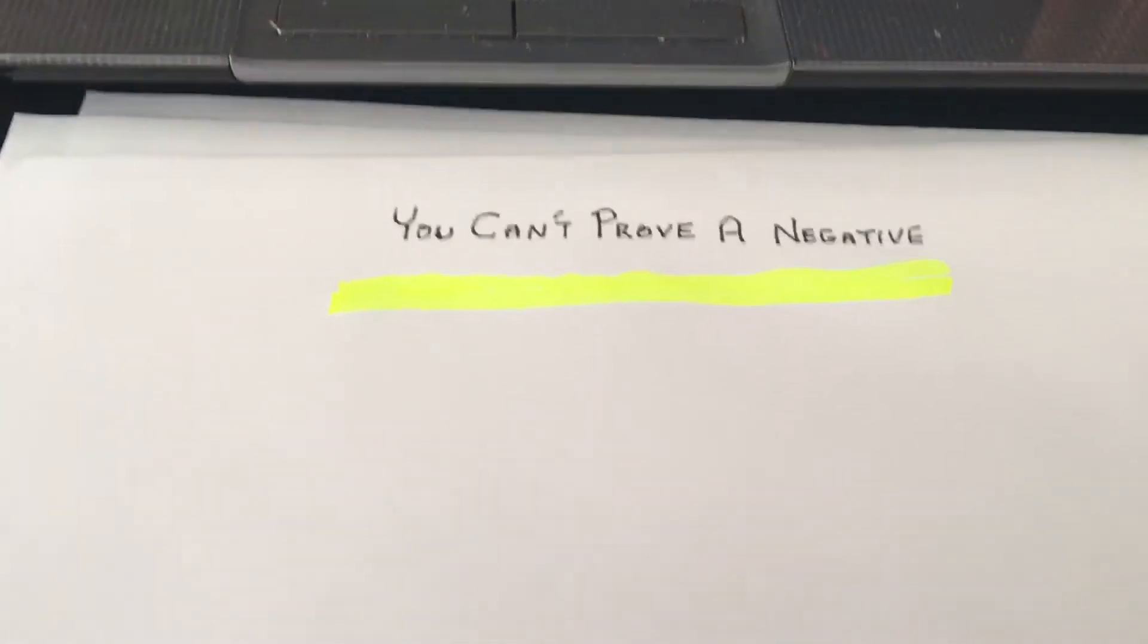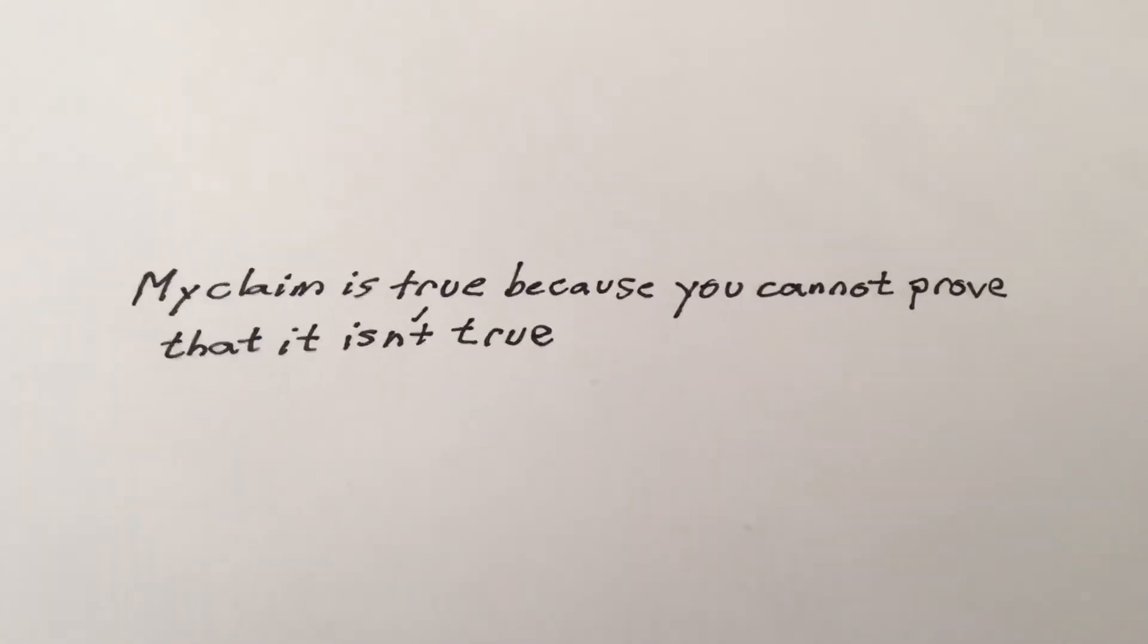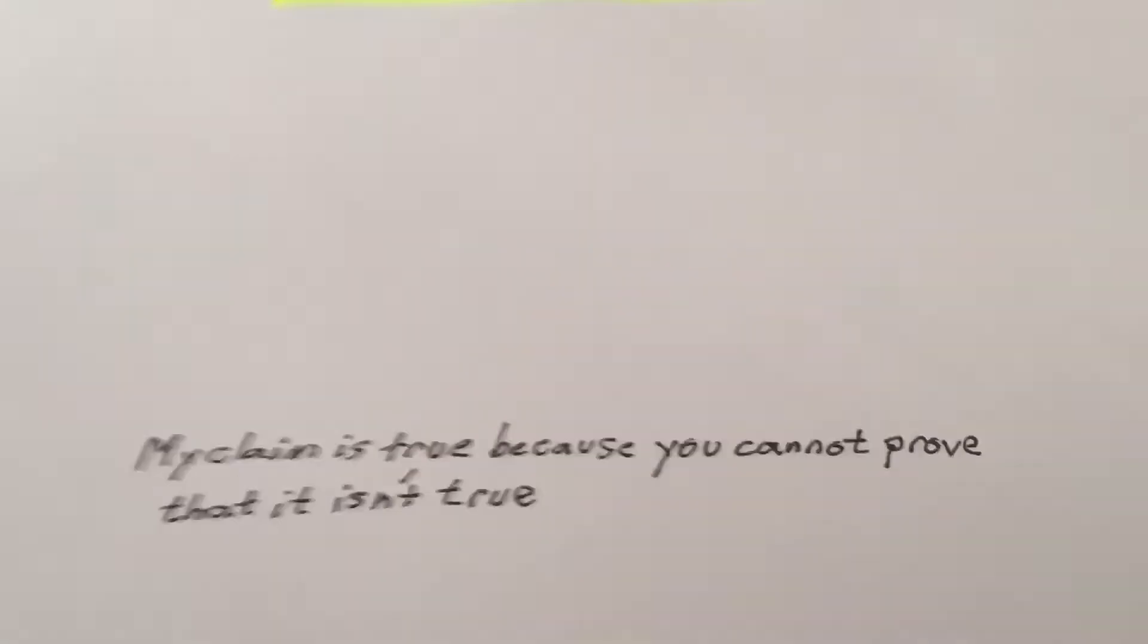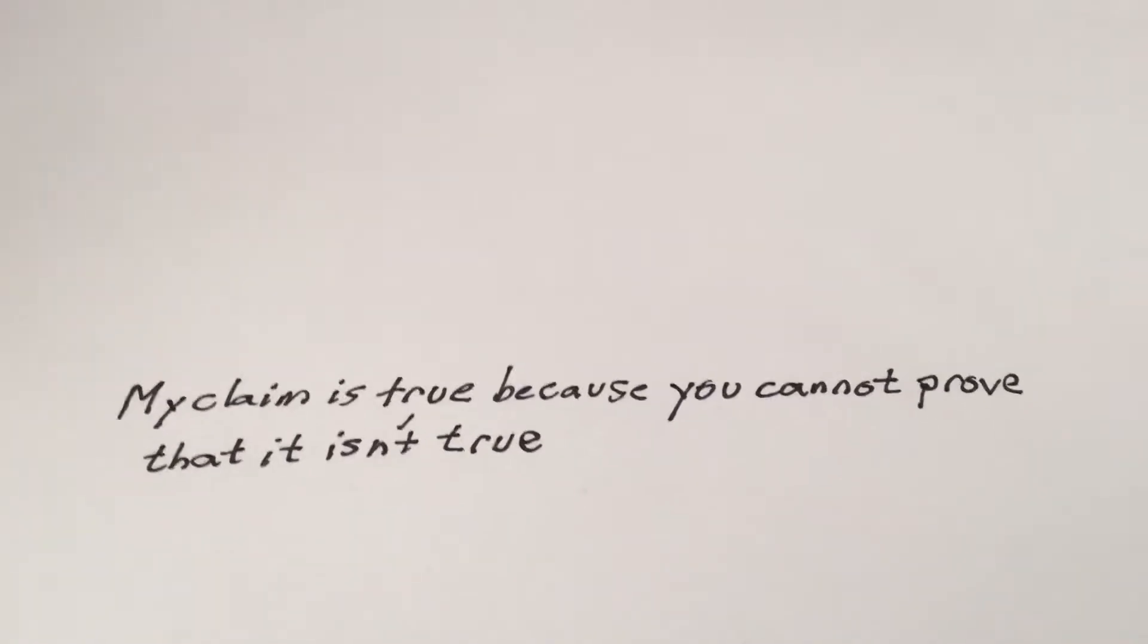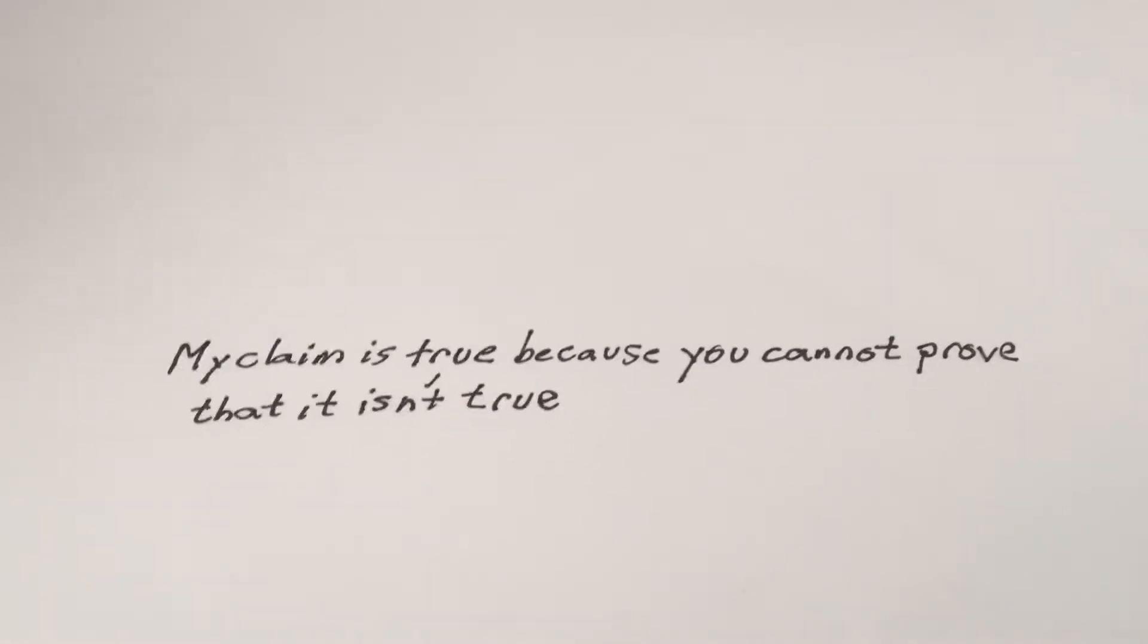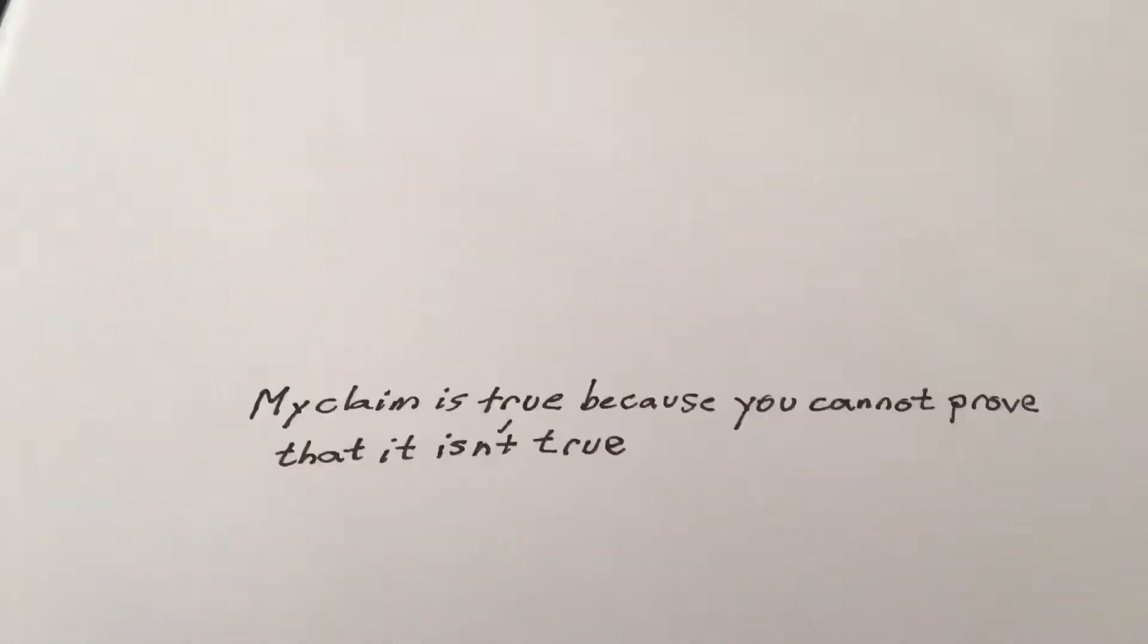All right, so the old you can't prove a negative. So my claim is true because you cannot prove that it isn't true. Now people use this all the time. They use it as an argument for the proof of God. They also use it as an argument for the proof of ancient aliens. You can't prove ancient aliens didn't shape ancient civilization, therefore aliens. All right, it doesn't make any sense and the whole argument is just crap.